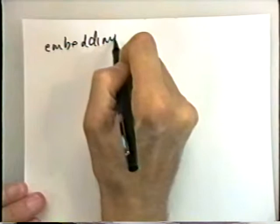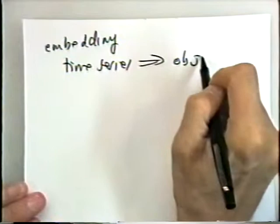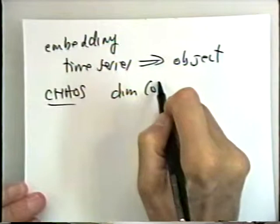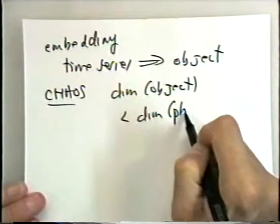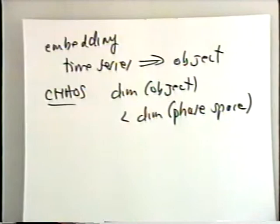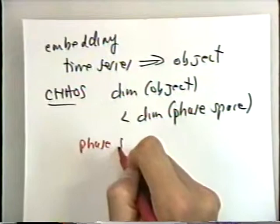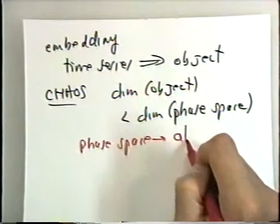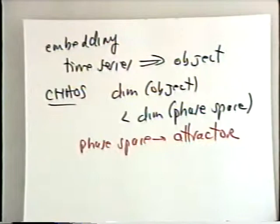When we do this embedding — when we transfer the time series to an object — the hallmark of chaos is that the dimension of the object is less than the dimension of the containing space, which is called phase space. When this is true, we call the object in the phase space an attractor. This is the hallmark of chaos, and this is the hint that the system is not truly random, even though the time series looks random.